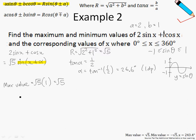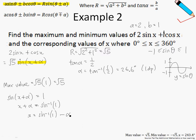Let us then work out the corresponding values of x. The maximum value occurs when sine of x plus alpha equals to 1. To find x, I will take the sine inverse of 1, and therefore x should just be sine inverse of 1 minus alpha. Pressing this into my calculator, I will end up with 63.4 degrees. So this is where the maximum value occurs.